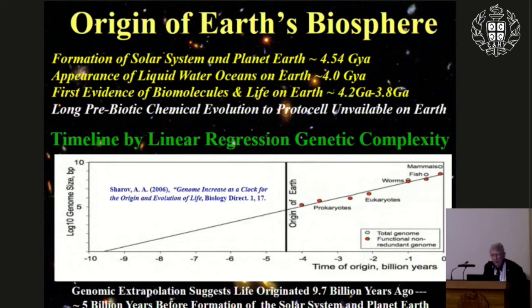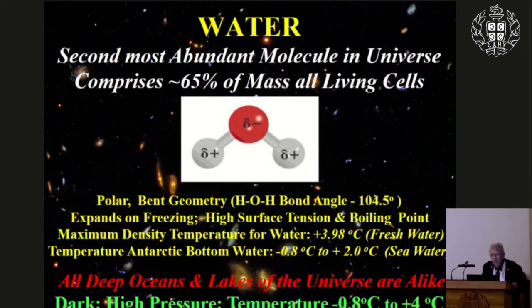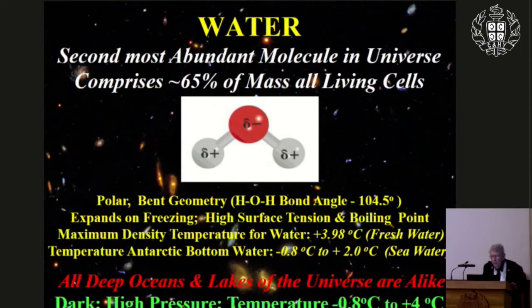The requirements for life are very simple: all known life forms require the coexistence of water, energy, and approximately 20 of the 118 chemical elements that are essential for life. Water is the second most abundant molecule in the universe, comprising about 65% of the mass of living cells. It has a polar bent geometry at 104 degrees, expands on freezing, and has high surface tension and boiling point — all profoundly important properties. Without water's expansion on freezing, nothing would be alive.